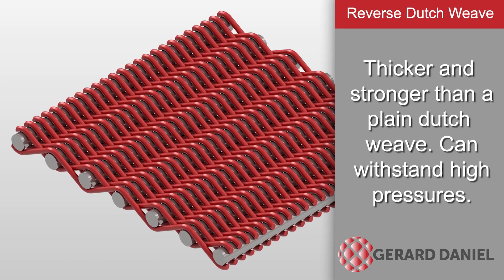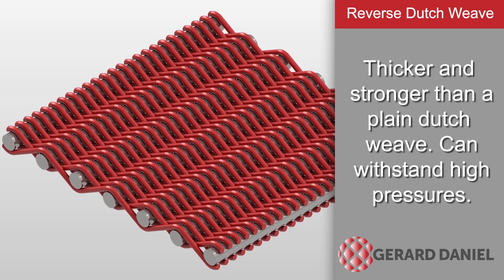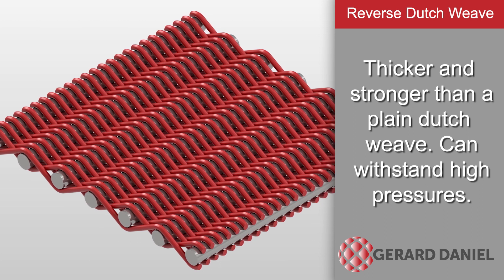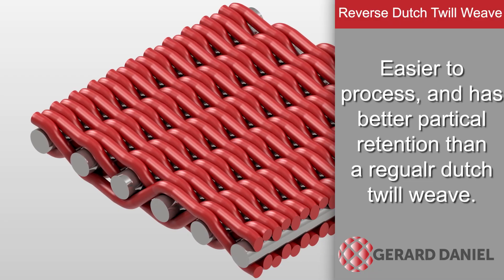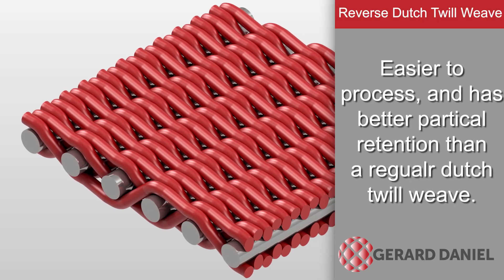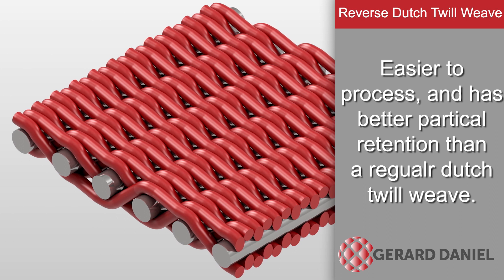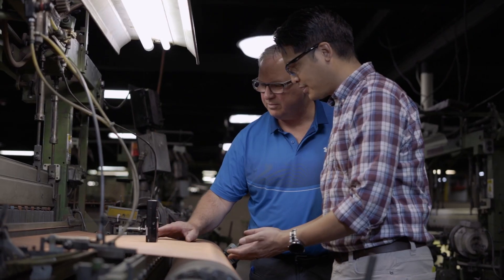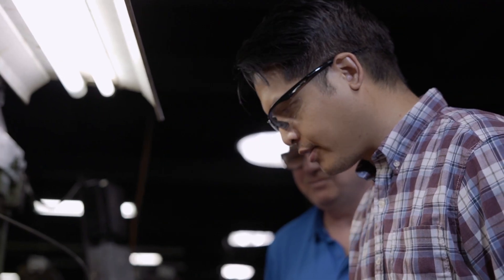These reversed orientations further alter the filtration and strength characteristics of their respective weaves. For example, the reverse plain Dutch weave is thicker and stronger than a regular plain Dutch weave and can withstand very high differential pressures. These weaves are good for long narrow profiles that coil lengthwise, but they can resist bending over their width. The reverse Dutch twill is easier to process and has better particle retention than a regular Dutch twill, but it doesn't hold up to pressure nearly as well. It is also not a commonly stocked item, with long lead times and only available as a custom order, and it costs the most of all the weaves.